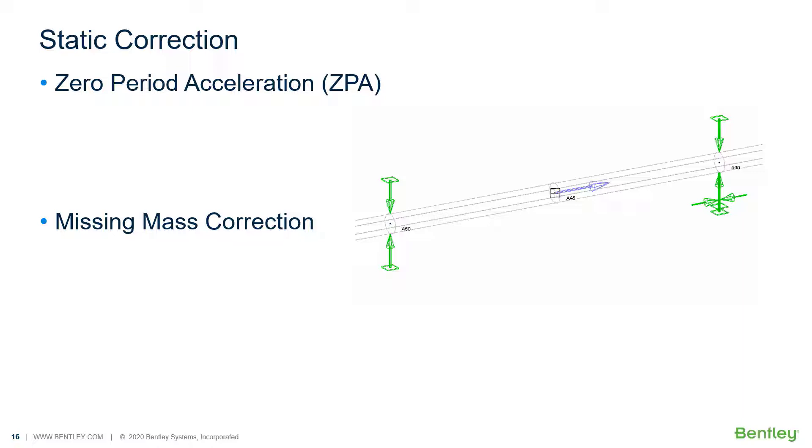The reason could be because the mode shapes involving the movement between the applied load direction and the support point are not computed as specified by the number of modes or the cutoff frequency. These missing mode shapes are usually axial, very stiff modes, and hence they're associated with mode shapes in the very high frequency range.